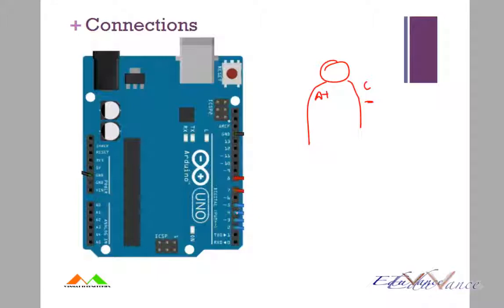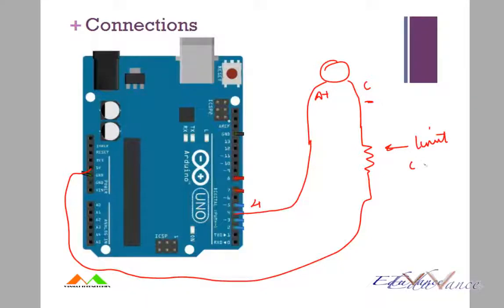So what we will do is, we will connect the anode to pin number 4 of the Arduino and the cathode will be connected via a resistor to ground. This resistor is to limit the current.